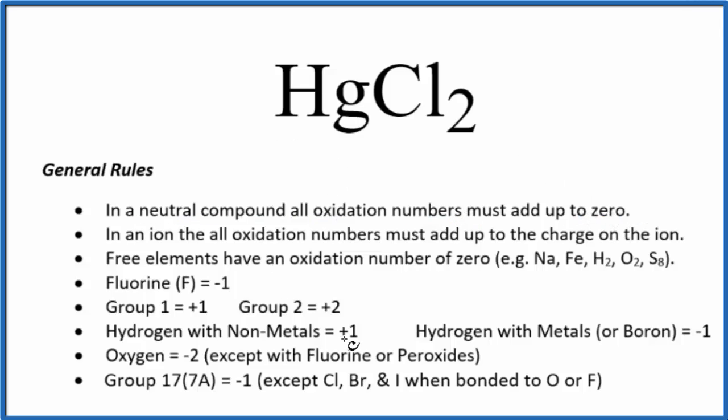We won't find mercury in our rules here. It's a transition metal, so it can have different oxidation states depending what it's bonded to. Here it's bonded to the chlorine, and chlorine is in group 17, sometimes called 7A.